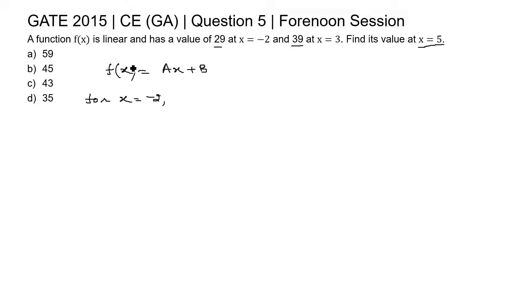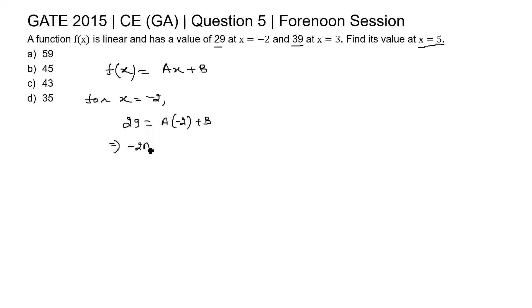For x equal to minus 2, the value of f(x) is 29. Rewriting the equation, we can write minus 2a plus b equal to 29. This is equation 1.